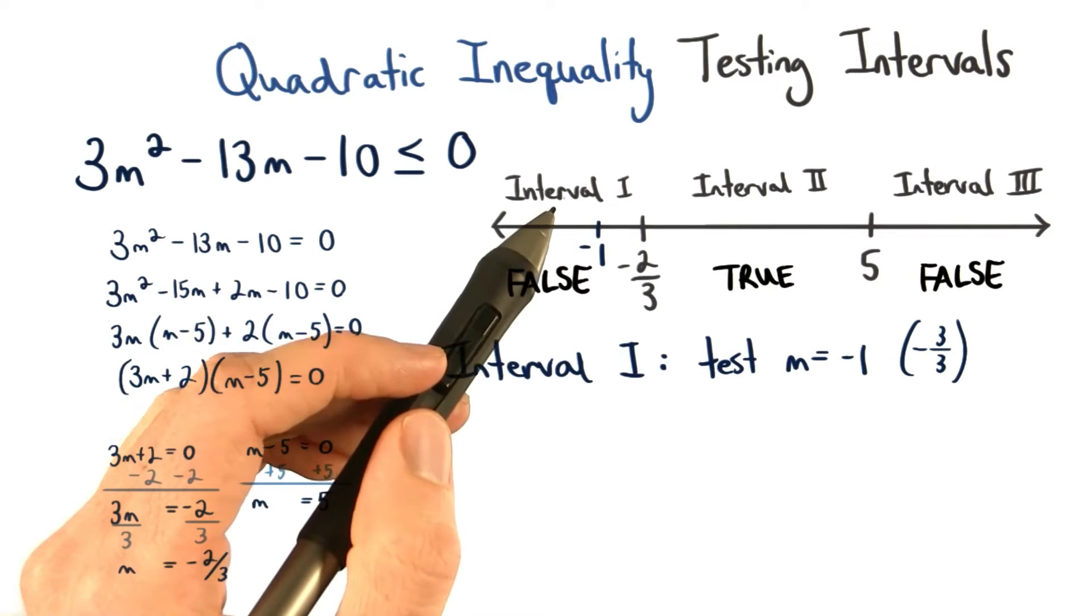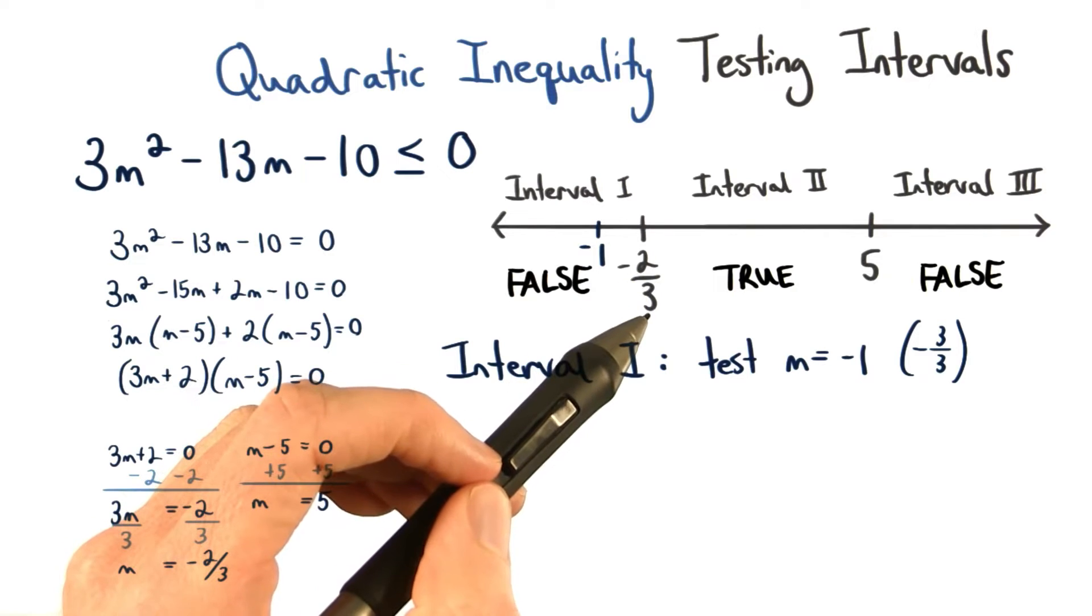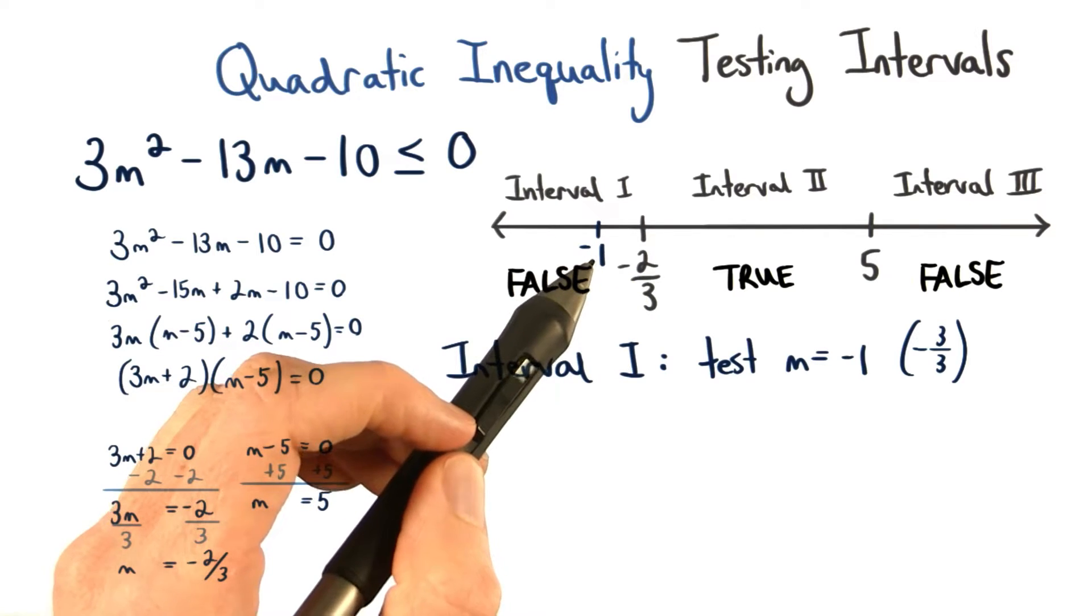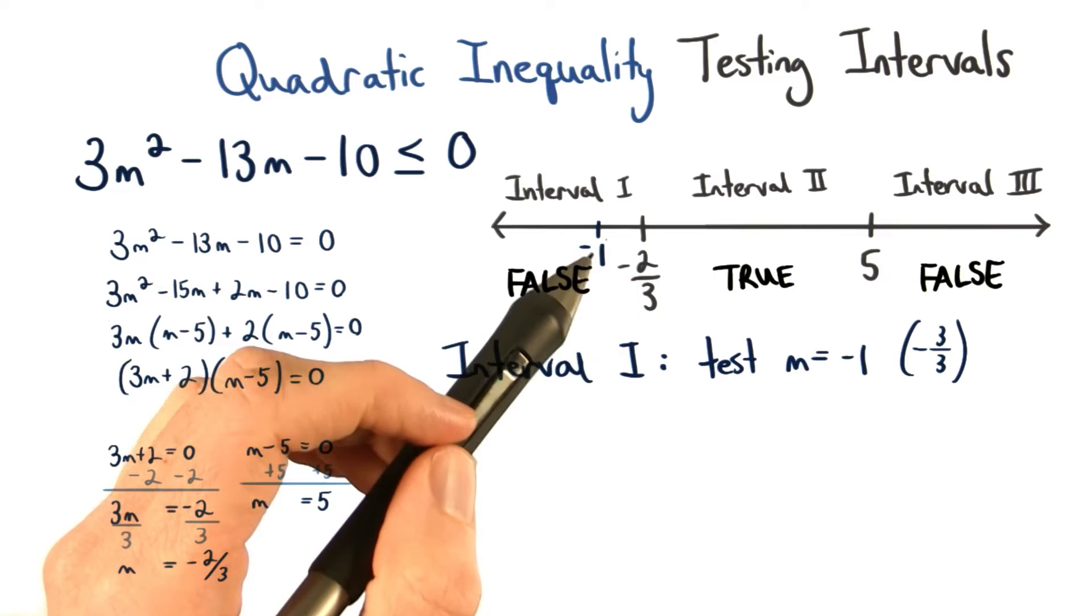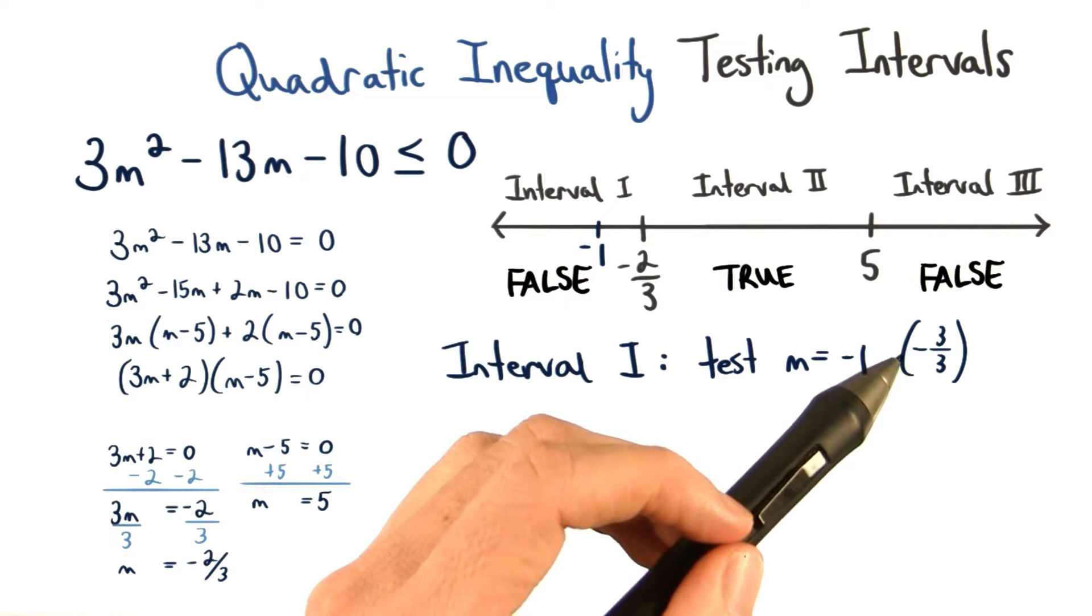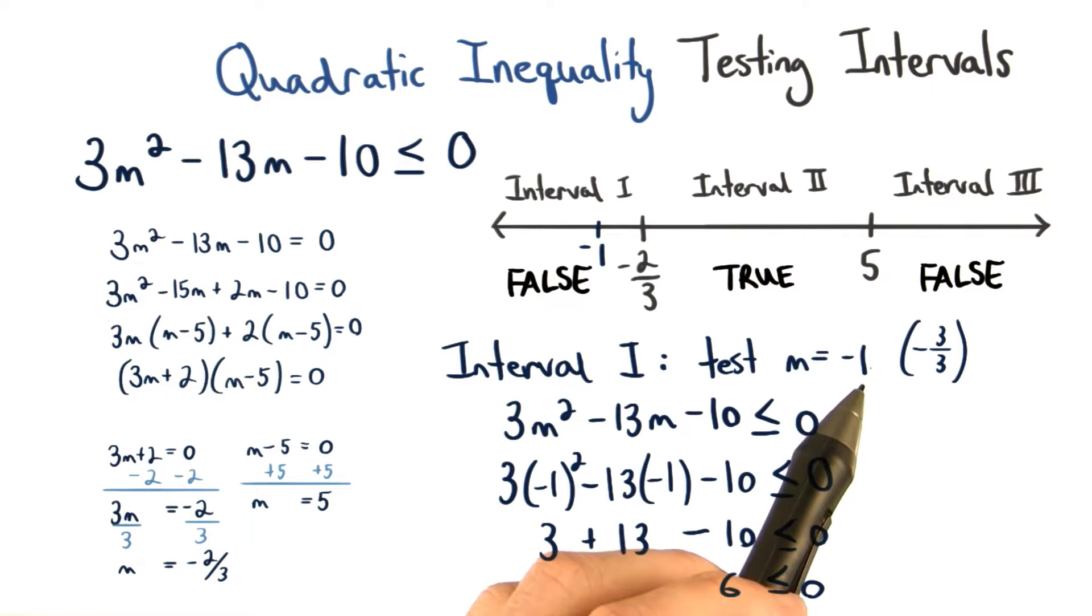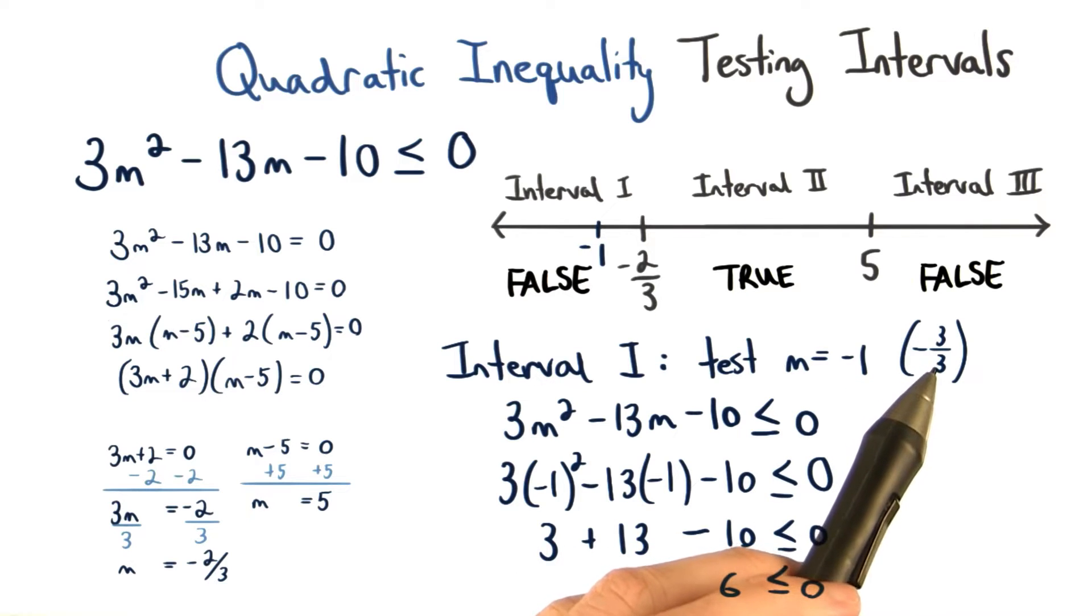In the first interval, we can test a number that's less than negative two-thirds. Negative 1 is less than negative two-thirds, since negative 1 can be rewritten as negative three-thirds. We want to plug in negative 1 instead of negative three-thirds since it's easier to work with an integer than a fraction.